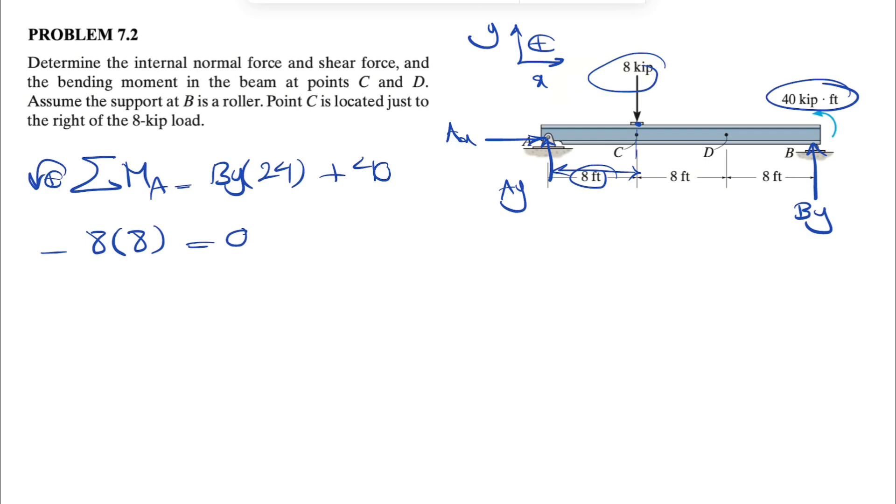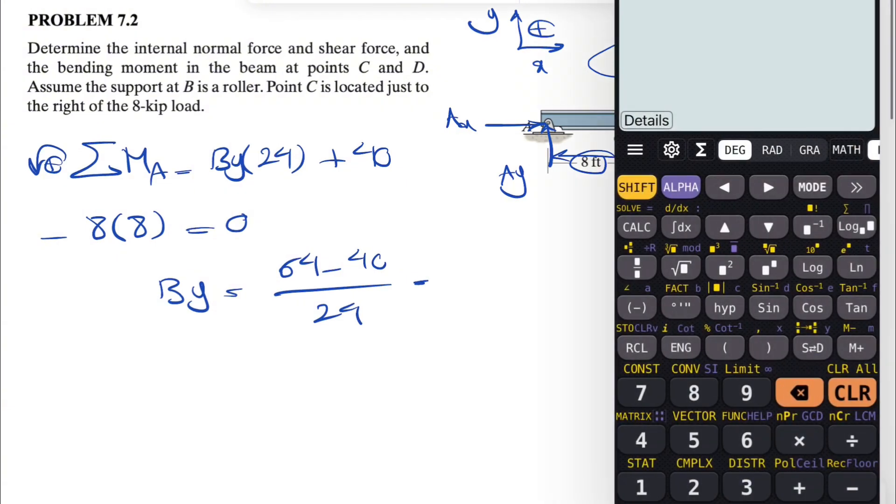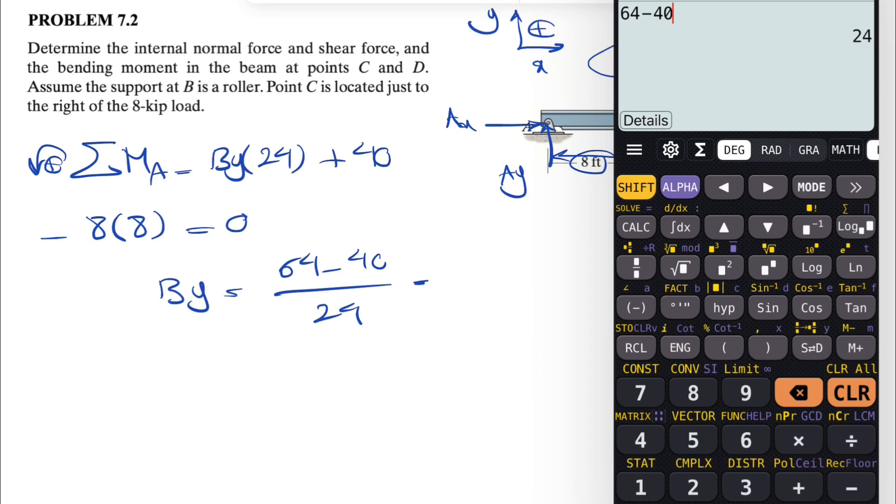Now we can find our By. By would be 8 times 8, or 64, minus 40, divided by 24. So that's going to be 1 kip.